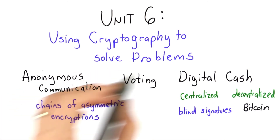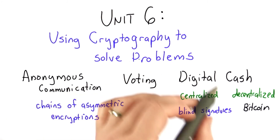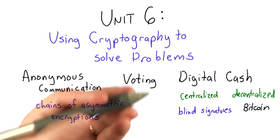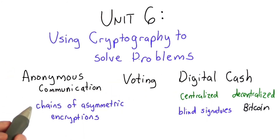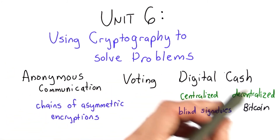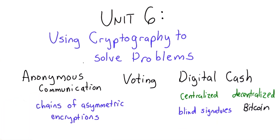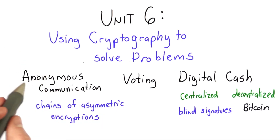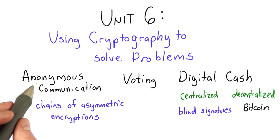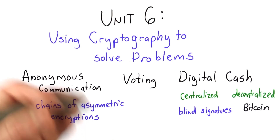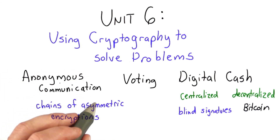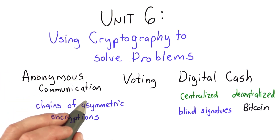All of these can be used just using the tools we've seen in this class, and we'll see ways to use asymmetric cryptography in many different ways in these examples. We'll also see ways to use symmetric cryptography, including hash functions as well as one-time pads.